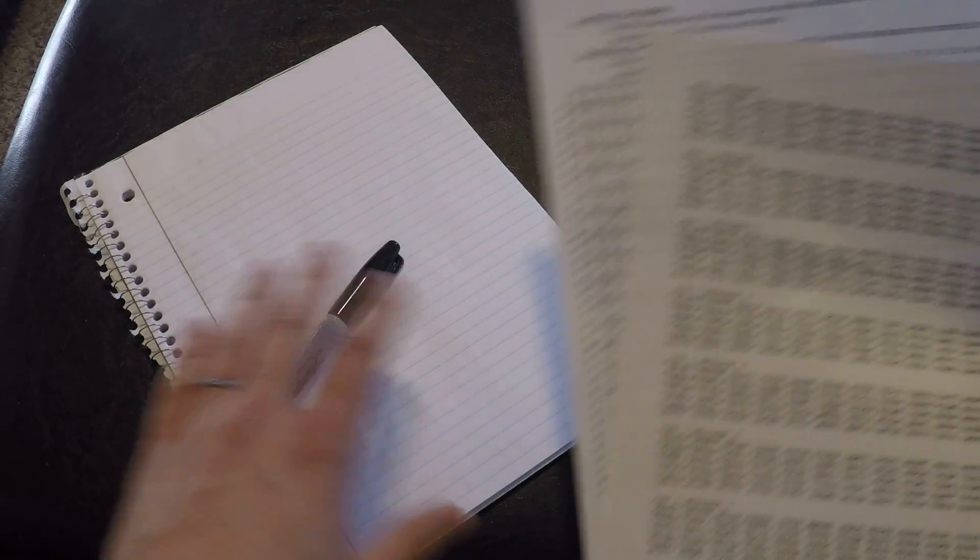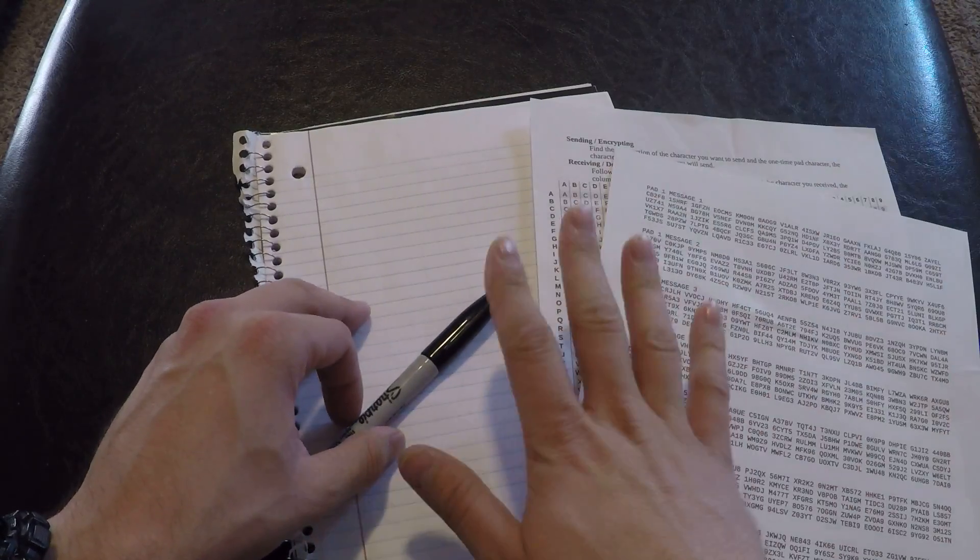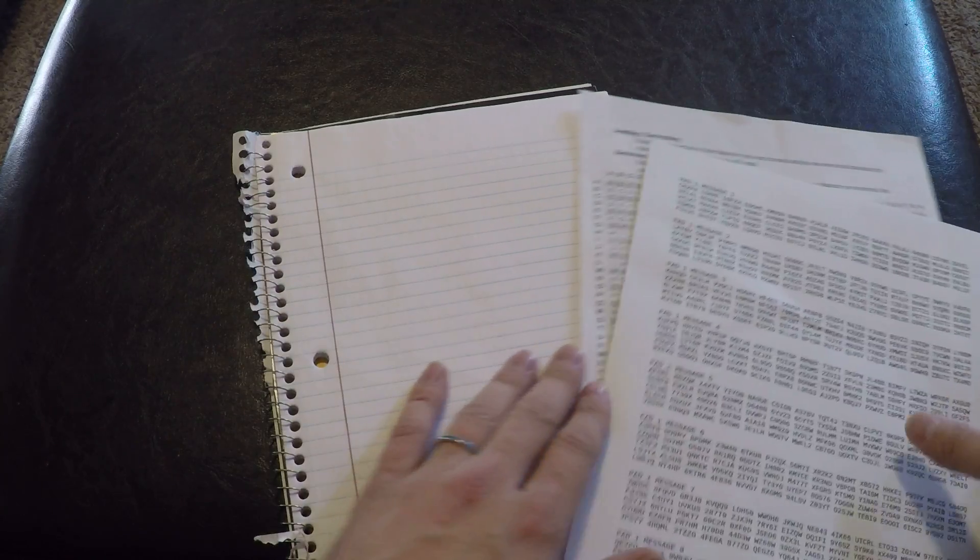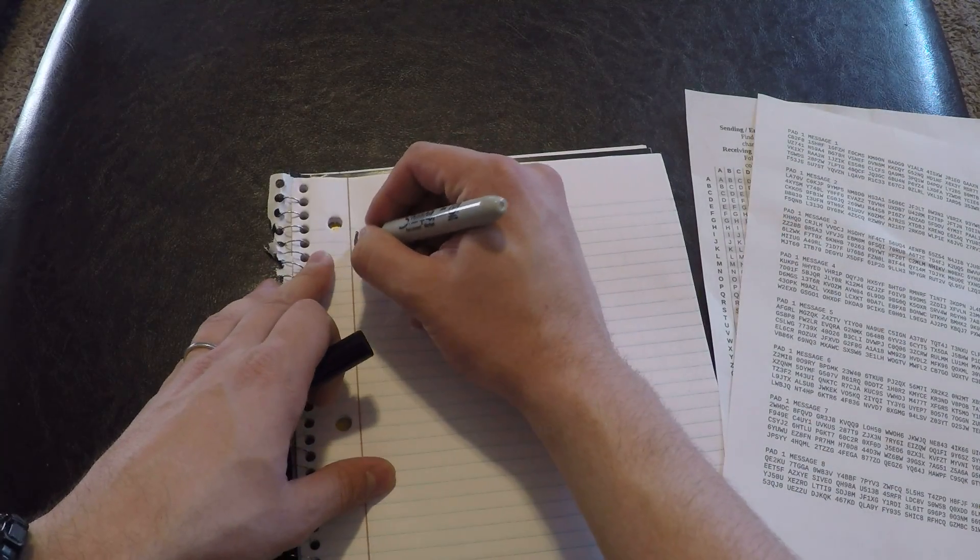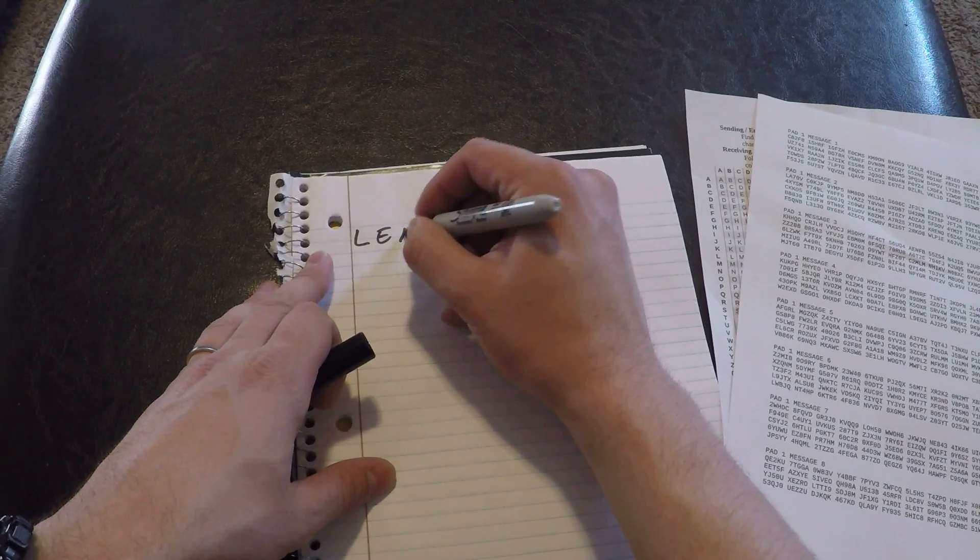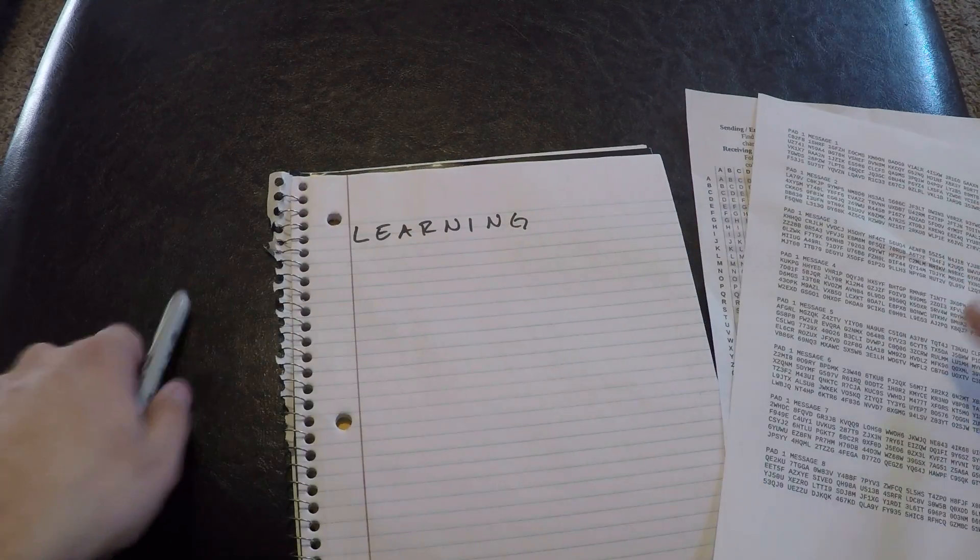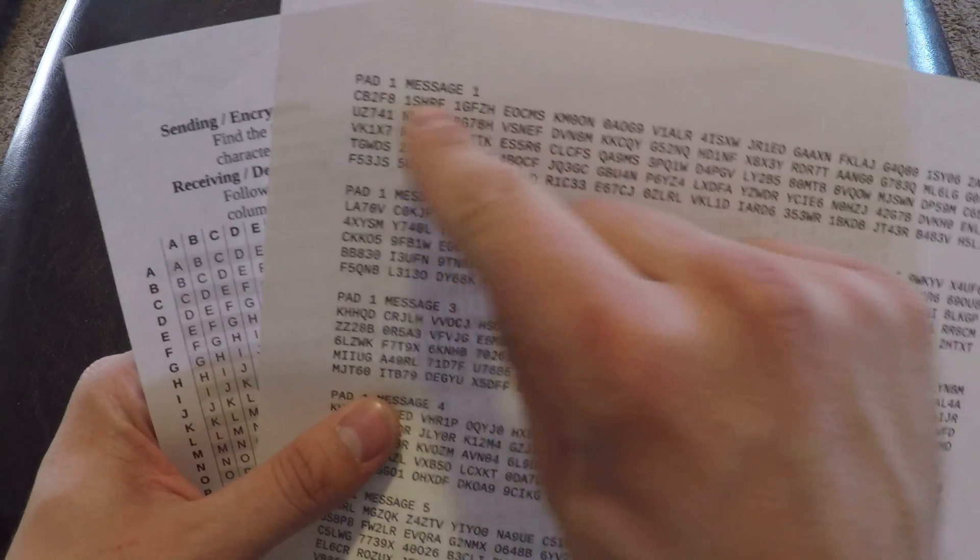All right, so first thing you want to do is you want to write down a message you want to send. So we're just going to send out, let's just do the first part on my YouTube channel name. We're going to send out learning. And then we're going to add the letters of learning to this message, this one time pad message here. And I'm going to show you guys how to do that.